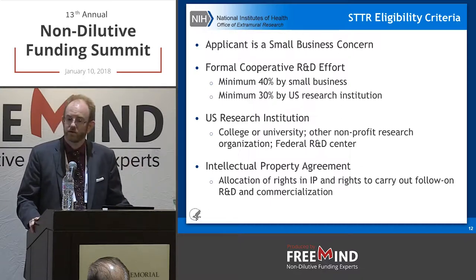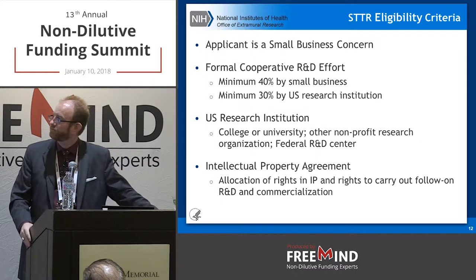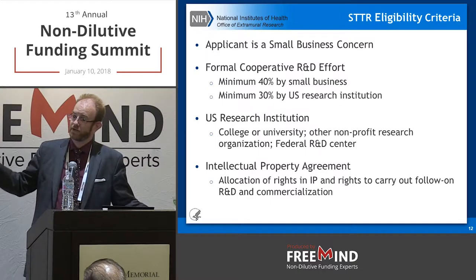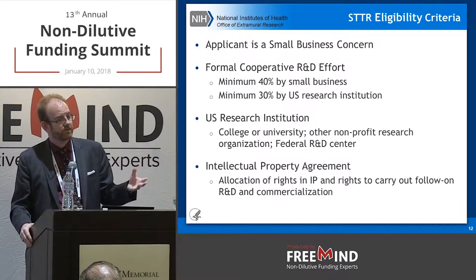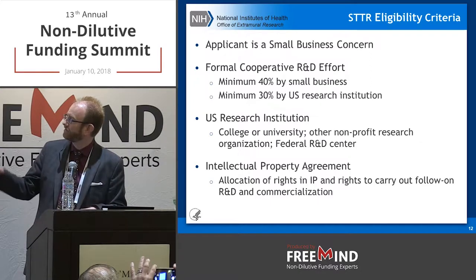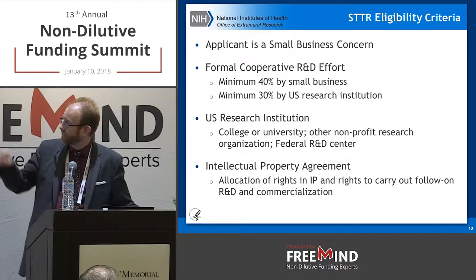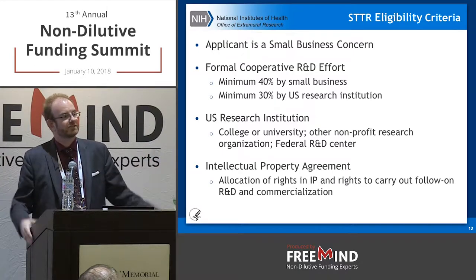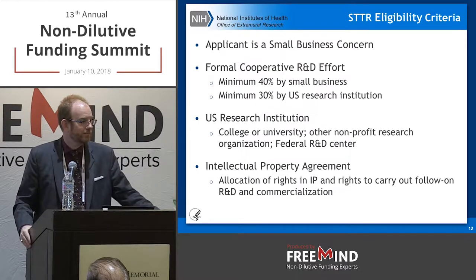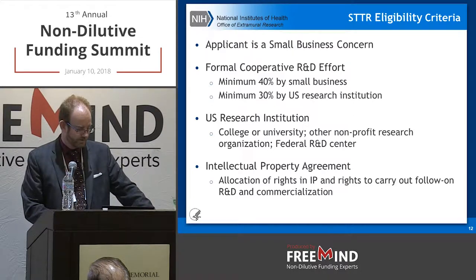For STTR, the same small business concern rules apply, except the VC rule. University partners cannot submit — the business submits. The 40-30 budget split: minimum 40% of the budget must go to the small business, minimum 30% to the university or research institution partner. The remaining 30% is flexible. Interestingly, the university partner could end up with 60% of the budget — they get their 30% plus the remaining 30% — but they are still a sub-awardee to the prime U.S. small business. The two parties also put together an IP agreement, and we strongly advise talking to patent attorneys.